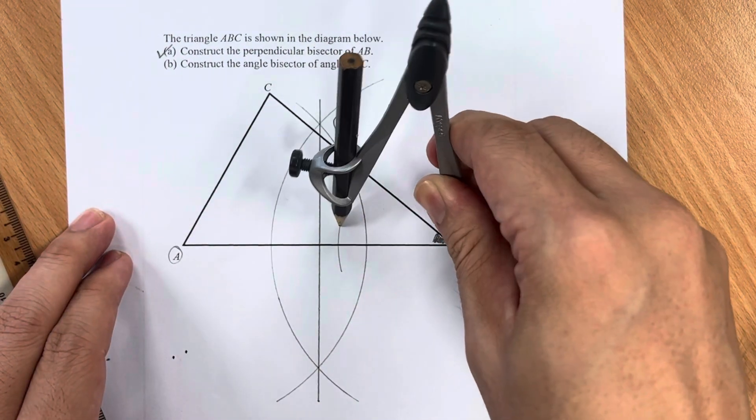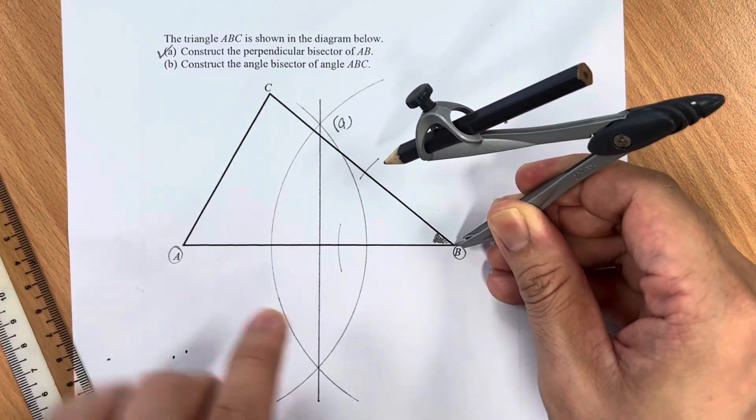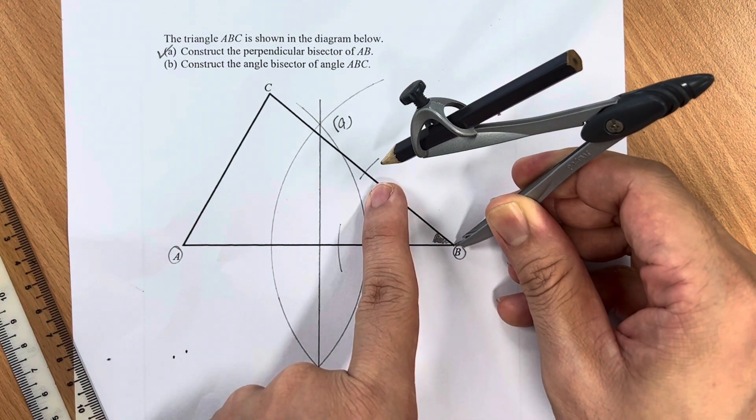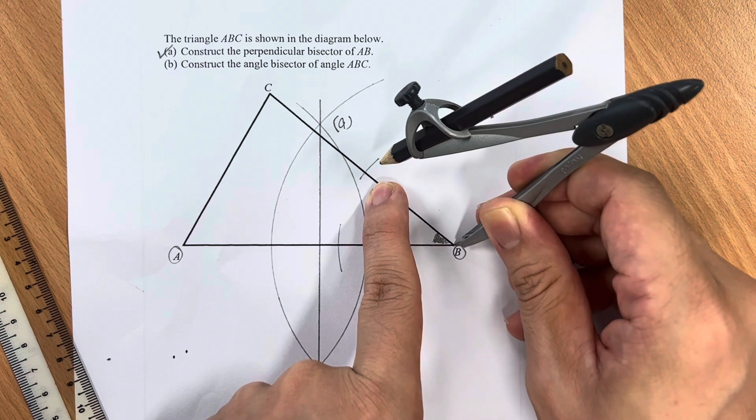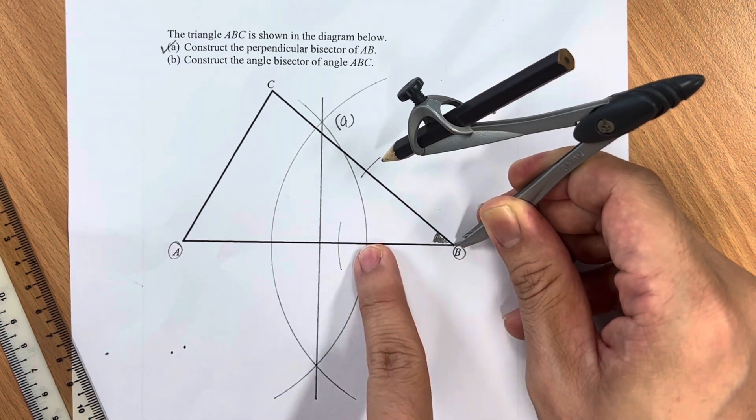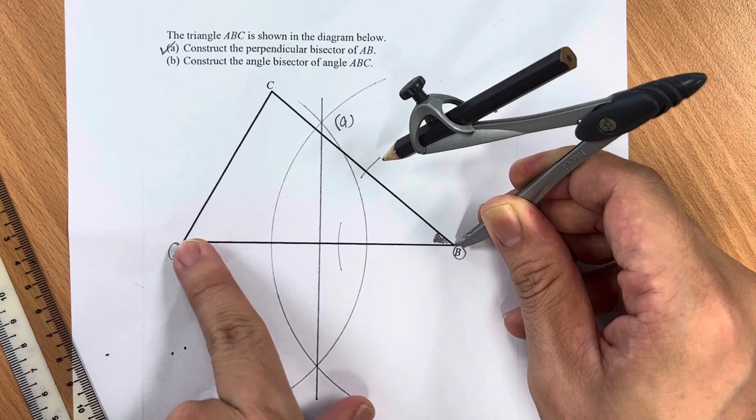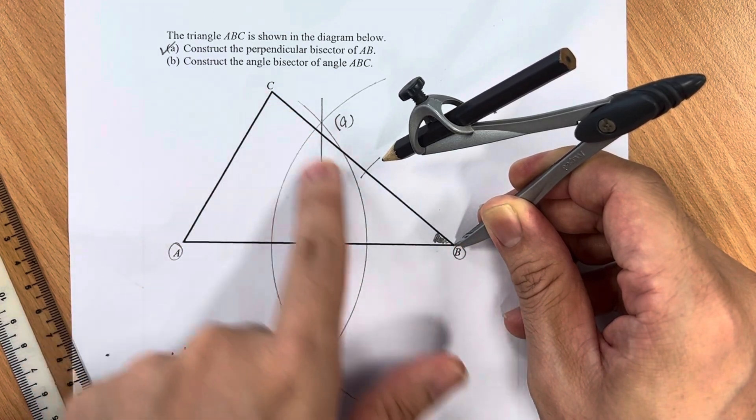Make sure you make an arc that cuts the two lines that make the angle, in this case AB and CB.